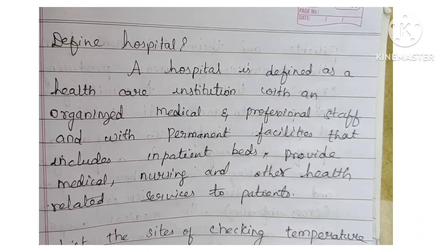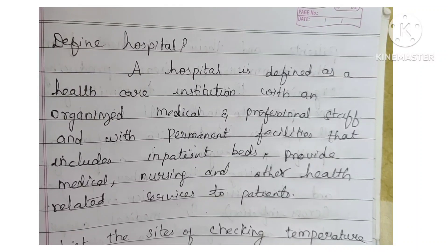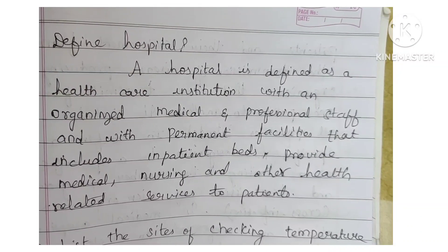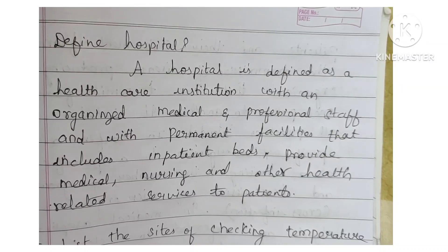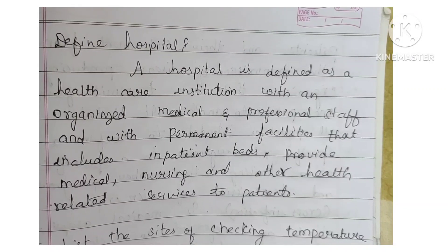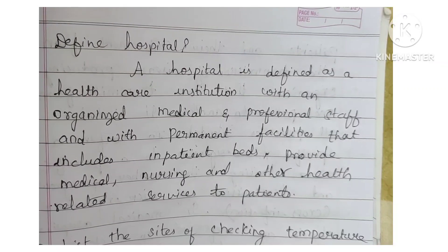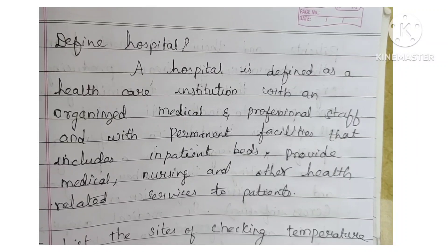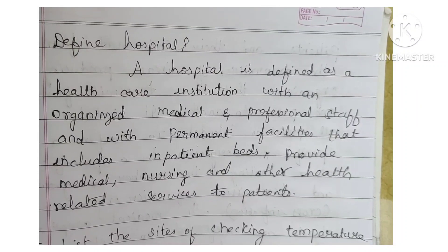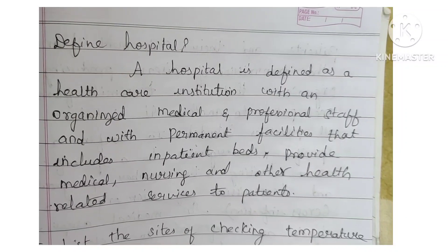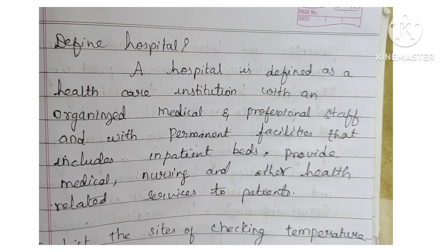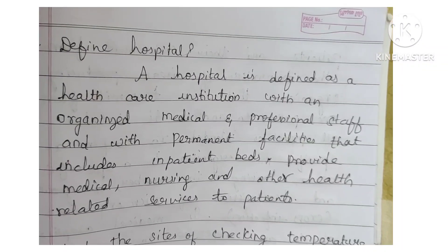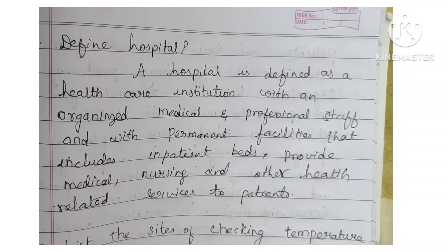Next: define hospital. A hospital is defined as a health care institution with an organized medical and professional staff and with permanent facilities that include inpatient beds, providing medical, nursing and other health related services to patients.